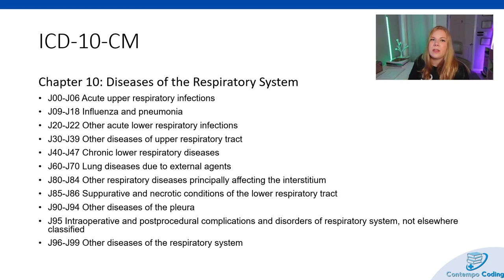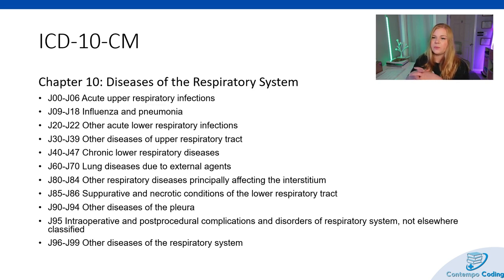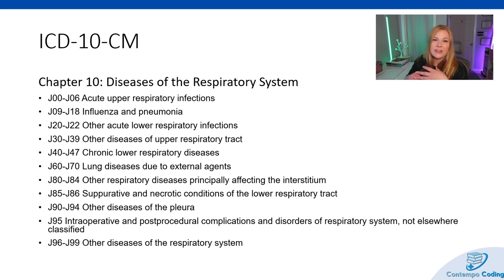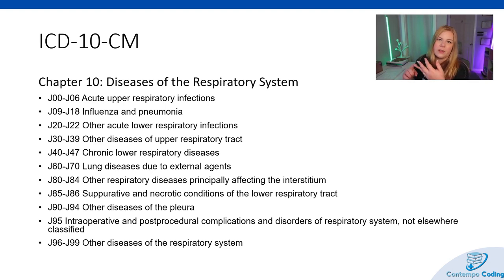As we discuss ICD-10-CM of the respiratory system, a lot of them are going to be in Chapter 10. We have upper respiratory infections, flu and pneumonia, acute lower respiratory infections, other diseases of the upper respiratory tract, chronic lower respiratory diseases, lung diseases due to external agents, other respiratory diseases principally affecting the interstitium, suppurative and necrotic conditions of the lower respiratory tract, other diseases of the pleura, and intraoperative and post-procedural complications. You're going to see things like COPD, upper and lower respiratory infections, flu, pneumonia, asthma — those are all going to be J codes. When you see a J code, that's going to be your respiratory system.